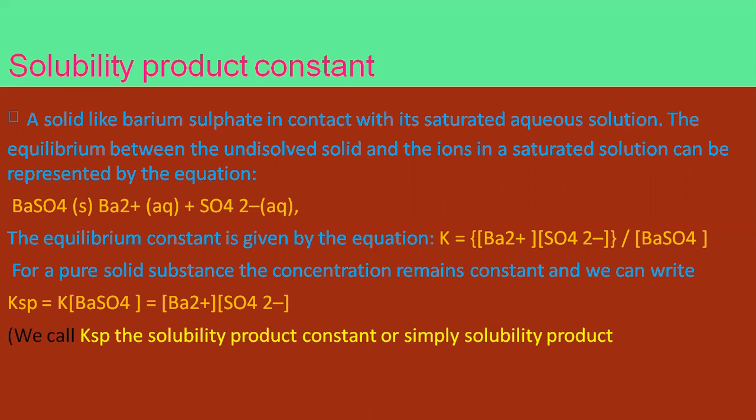The solubility product constant: a solid like barium sulfate, BaSO₄, in contact with its saturated aqueous solution has an equilibrium between the undissolved solid and its ions. When you mix barium sulfate, it breaks down into ions — Ba²⁺ plus SO₄²⁻ — but it does not completely dissolve. The undissolved particles settle down as a precipitate, so there is an equilibrium between the ions in solution and the undissolved solid left behind.